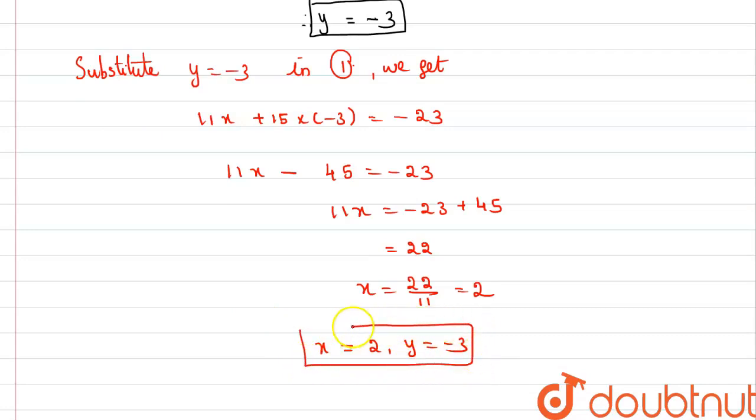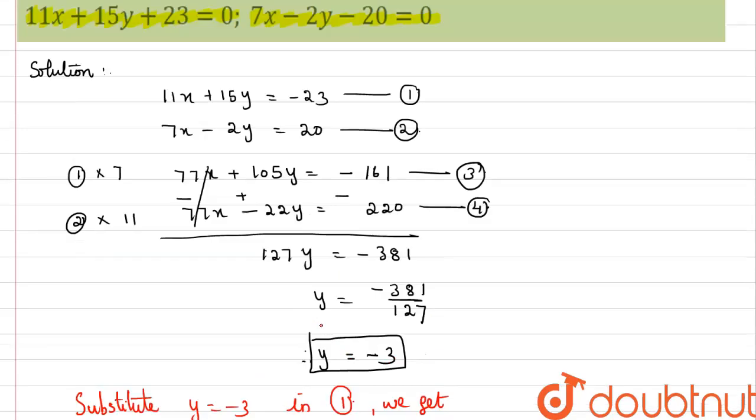For cross-verification, we can substitute the values of x and y in any one of these equations and check it. Consider the second equation. Substitute the values of x and y. So x is 2. We will get 14 minus of negative plus 6 equals 20. It is satisfied. Therefore the solution is correct. Thank you.